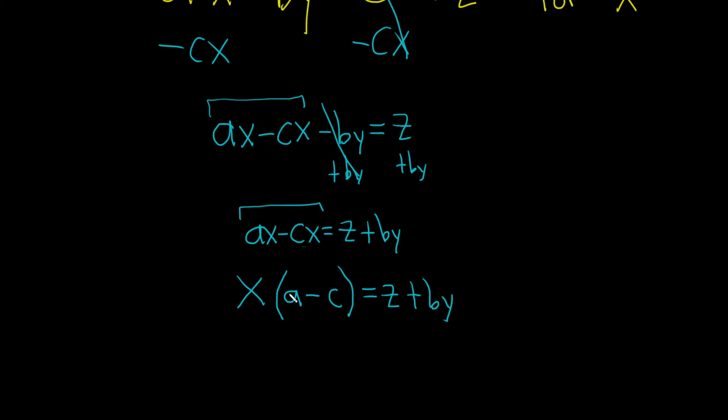And always check, right? X times a is ax, x times c is cx, and we have a minus.